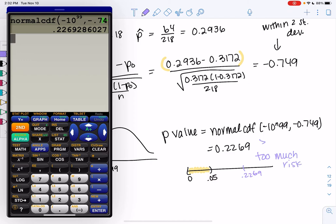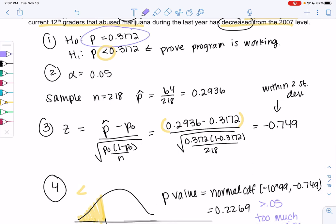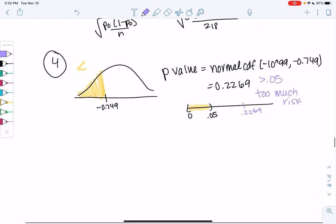We're not going to reject. So if the program is not working, if the percent is staying the same, there's a 22% chance this would happen randomly. And 22 can easily happen. That's almost one out of five. So that's way too risky. We will not reject.